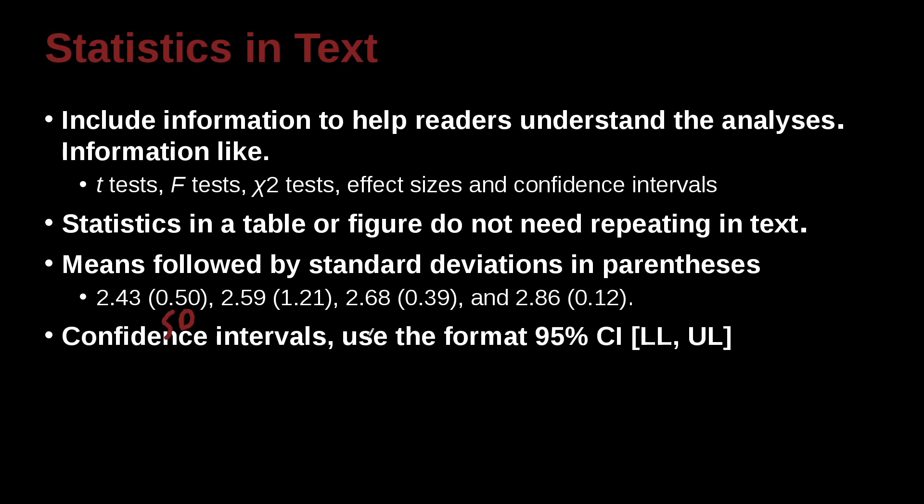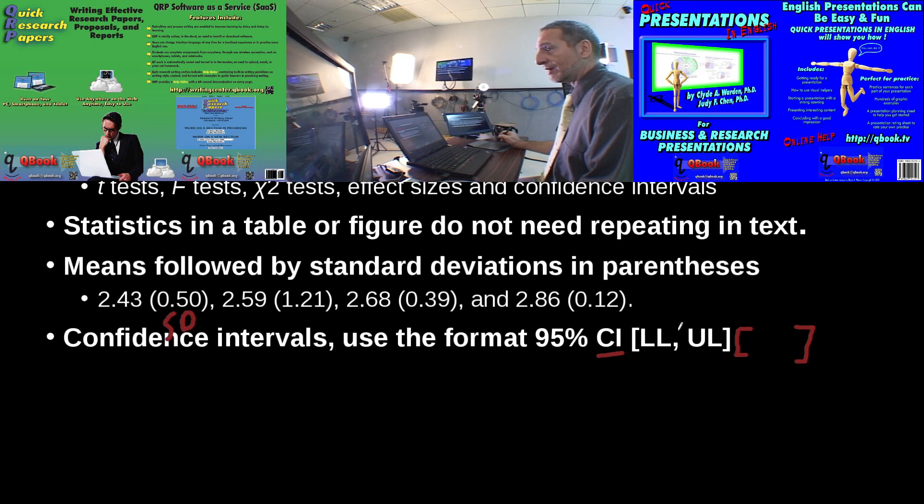Confidence intervals. Confidence intervals also you can use a format like this. So for example, if your confidence interval is 95%, then you write the CI, which means confidence interval. And then you use the bracket, left bracket, right bracket, and then you include the lower level and the upper level. That is the low number and the high number for the confidence intervals.